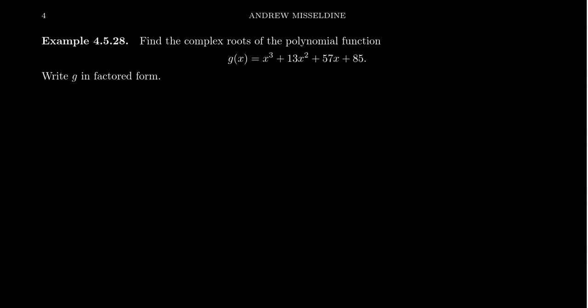In this final example for section 4.5, let us try to find the complex roots of the polynomial function, which is the same thing as writing it factored with a complex factorization. So we have g of x equals x cubed plus 13x squared plus 57x plus 85.